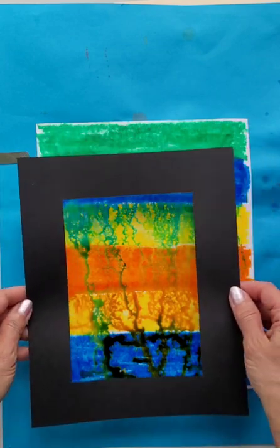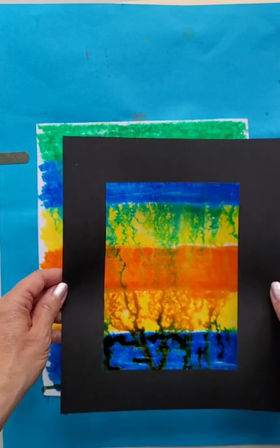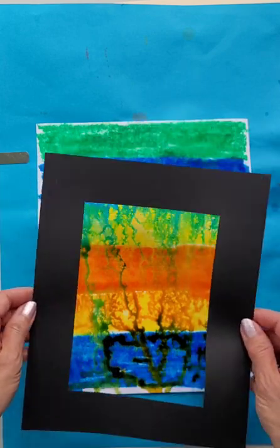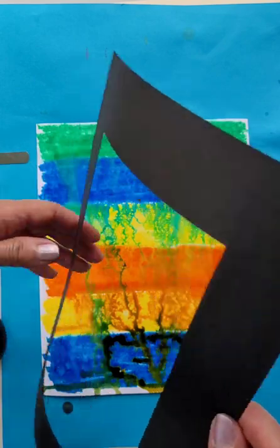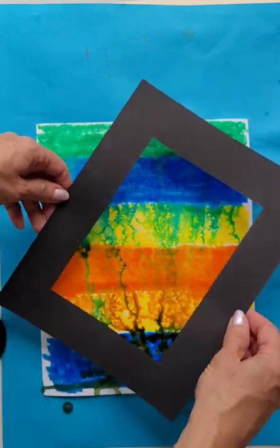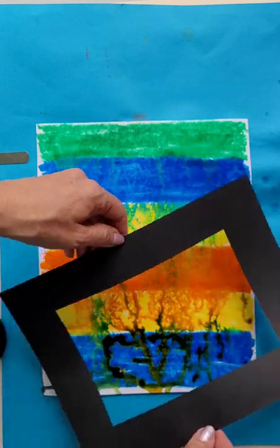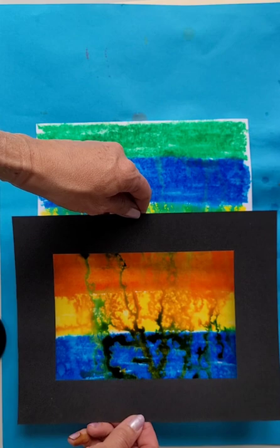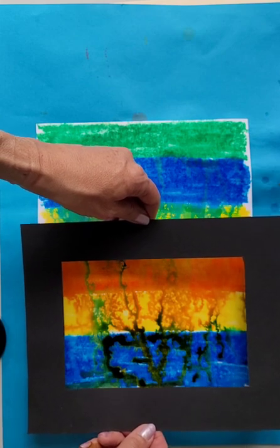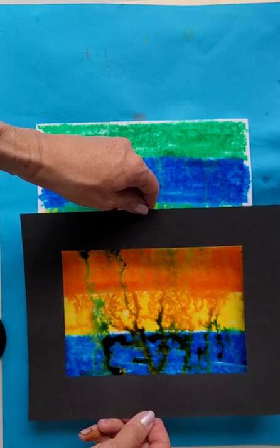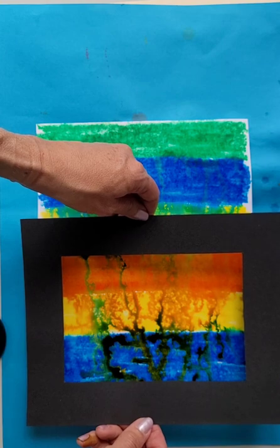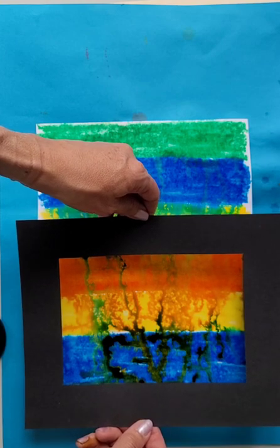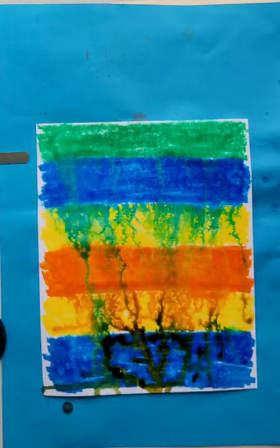And then you're going to move your frame around, or your mat, around your paper to decide which parts you think are the most interesting and what would make the best composition for your work. I really like this dark area, actually, over here. So I think that's where I would put it. But I'm going to let it dry before I do that.